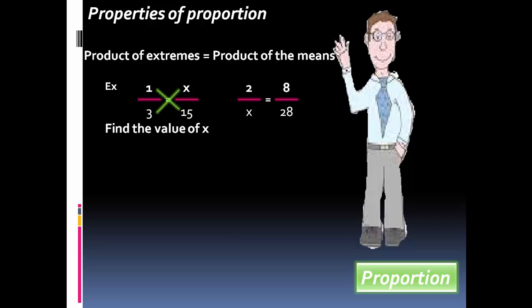According to the rule we know before, product of extremes equals product of means. x equals 1 times 15 over 3, equals 5.